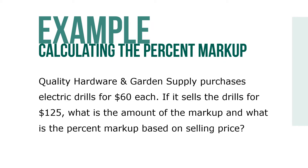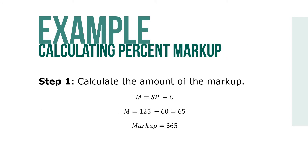Here's an example. Quality Hardware and Garden Supply purchases electric drills for $60 each. If it sells the drills for $125, what is the amount of markup and what is the percent markup based on selling price? Calculate the amount of markup using M equals SP minus C, so M equals 125 minus 60, which equals a markup of $65.